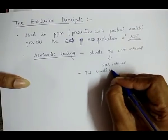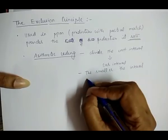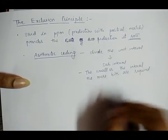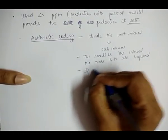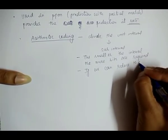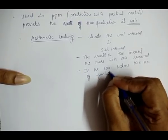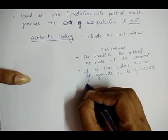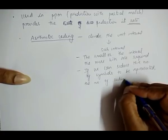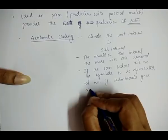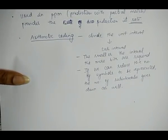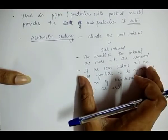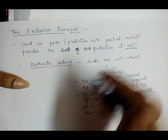The smaller the sub-interval, the more bits are required to distinguish it from the other sub-intervals. So if we can reduce the number of symbols to be represented, then the number of sub-intervals goes down as well. This in turn means that the size of each sub-interval increases, leading to a reduction in the number of bits required for encoding. That same principle applied in arithmetic coding is now applied in the exclusion principle to reduce the rate.